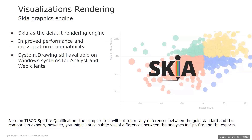Spotfire now uses Skia as the default rendering engine for web player and automation services. Skia is a modern graphics library that provides advantages in terms of performance and cross-platform compatibility, making it easier to have a consistent experience across different devices and operating systems. The transition to Skia has been thoroughly tested and validated to ensure no adverse effects on analysis functionality or user experience. Previously, we used the System.Drawing library from .NET. Client-side and server-side toggles are available to switch back to System.Drawing on Spotfire desktop and web clients running on Microsoft Windows in case you encounter any issues with Skia.